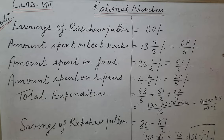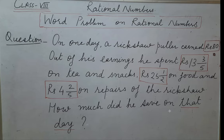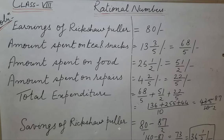When we add the numerators we get 435, and the denominator is 10. We can cancel it — it is divisible by 5 — so we get 87/2. This is his total expenditure. But our question is: how much did he save on that day? So we need to find the savings.